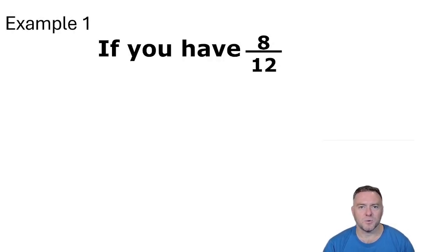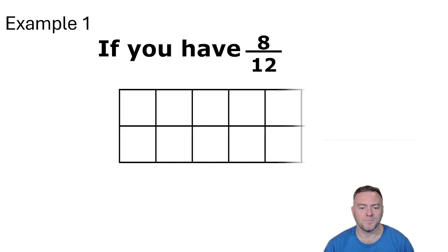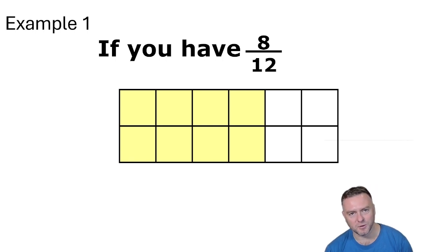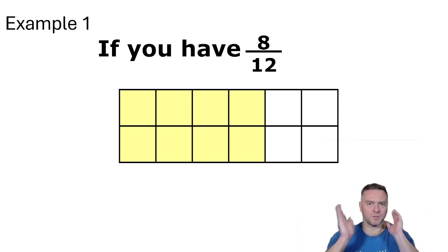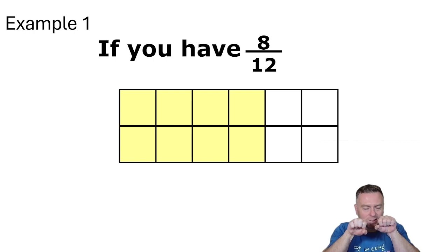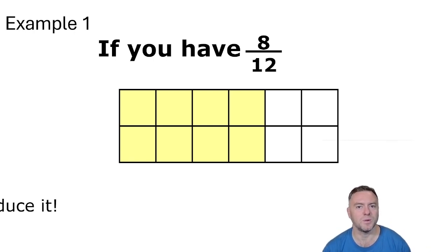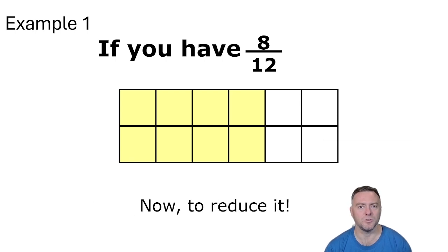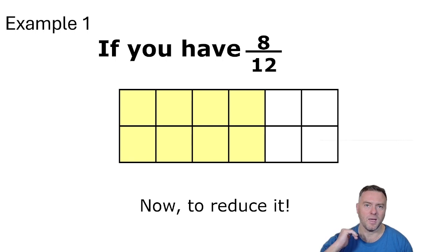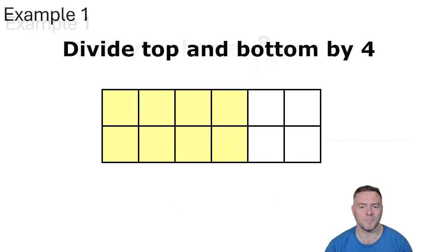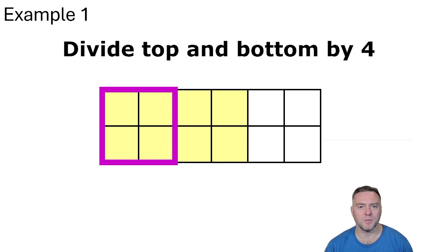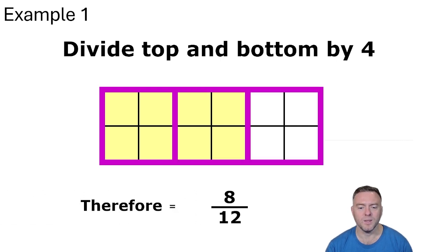So if we had 8 out of 12 and we want to reduce that down — imagine those are the 8 bits selected out of the 12 parts. We've chopped it up into 12 little separate equal parts. We can then use equivalent fractions and divide both the top and the bottom by 4. We can now see that 8 over 12 is exactly the same as 2 thirds.